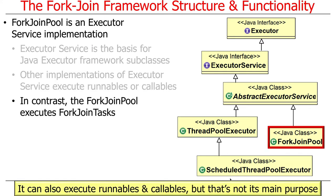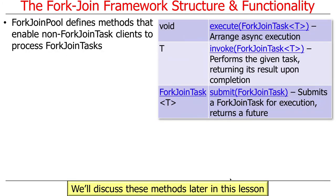In contrast, ForkJoinPool executes ForkJoinTasks. It can also execute Runnables and Callables, but that's really not its purpose. The ForkJoinPool defines methods that allow non-ForkJoinTask clients to process ForkJoinTasks. There's a distinction between non-ForkJoinTask clients and ForkJoinTask clients, and it has a big impact on how things work under the hood.